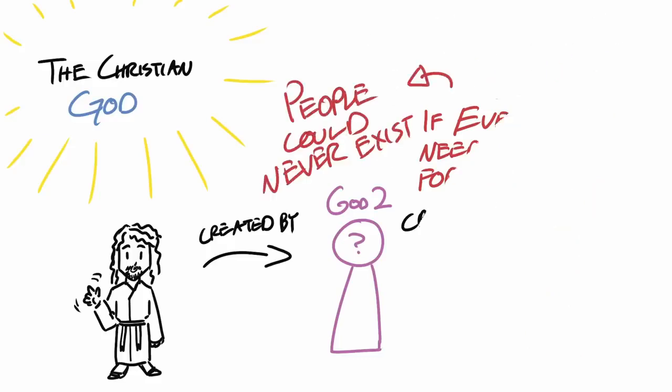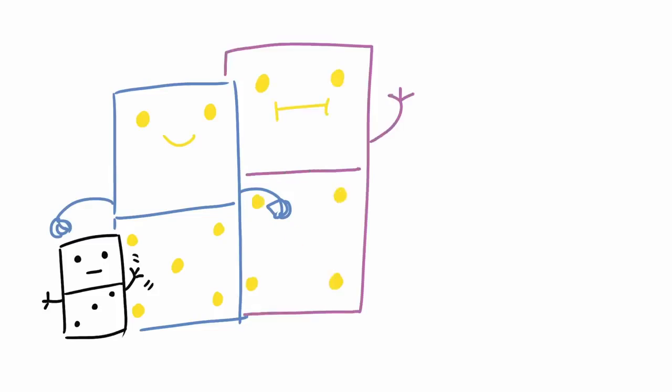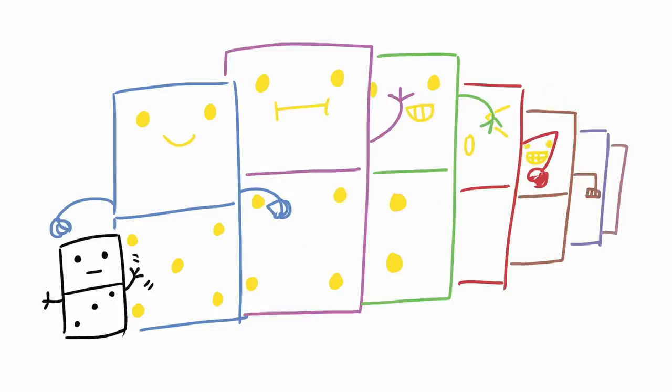Why? Let's look at ourselves, the existence of people, as being a domino. And the Christian God who created us, he's the domino before us. And God 2 is the domino before Christian God. And God 3 is before God 2 and so on. Now, if everything always needed a cause for its existence, then there would be an unending or infinite number of dominoes. And if there was an infinite number of dominoes, we couldn't be here because nothing could ever begin.